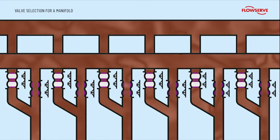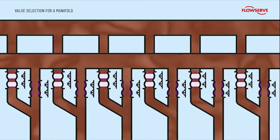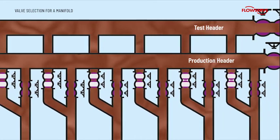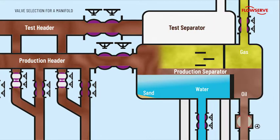Production and test manifolds are used in these systems to control which well fluids are sent into the separators. Valves in these manifolds are subjected to high working pressures and severe conditions and can get prematurely damaged if the wrong valve type is selected.